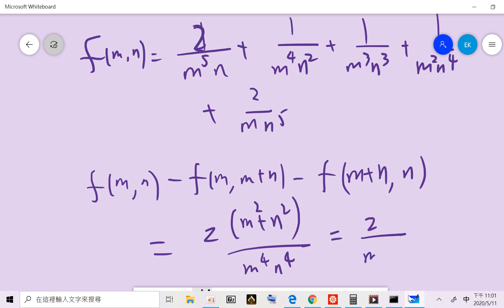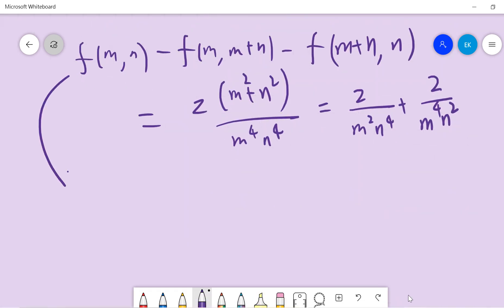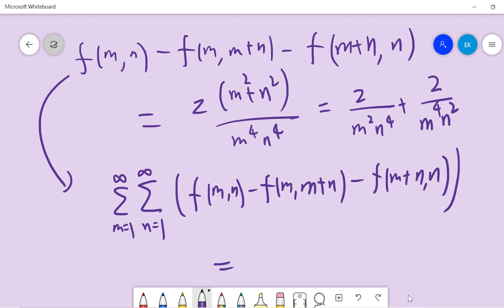So we can write it as 2 over m squared n to the 4th, and 2 over m to the 4th n squared. And a similar argument says that suppose we sum over m from 1 to infinity, n to infinity, on the left-hand side. So basically I will write it down. It's basically the same as we proved for zeta 4. So this term will become, don't worry, it's somewhat complicated. So this is the first term, and the second term is exactly the same as the first term, so times 2.